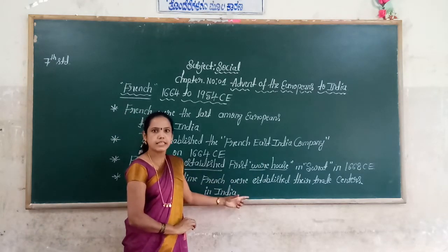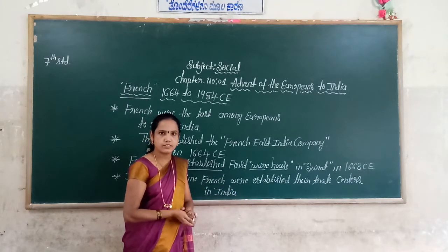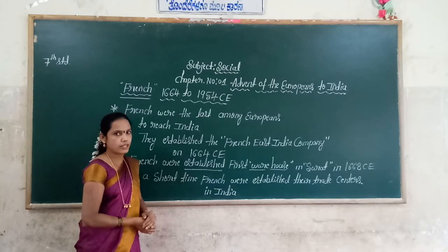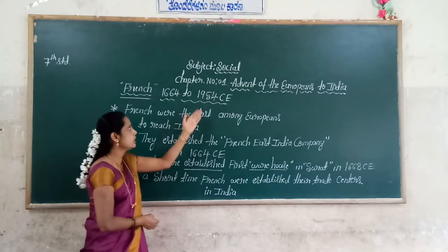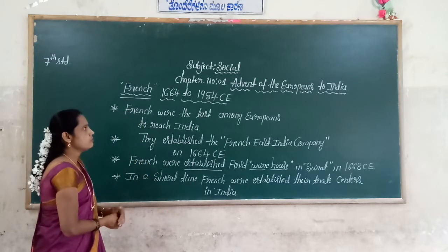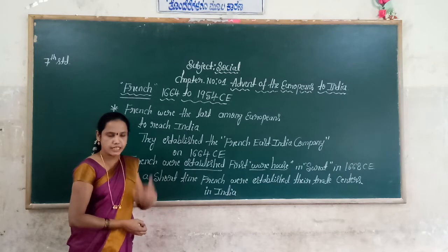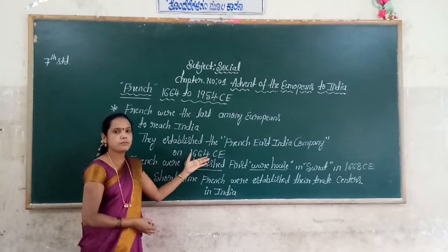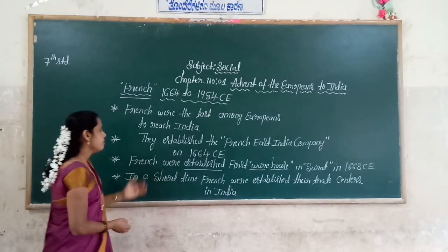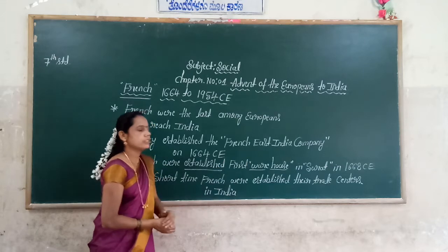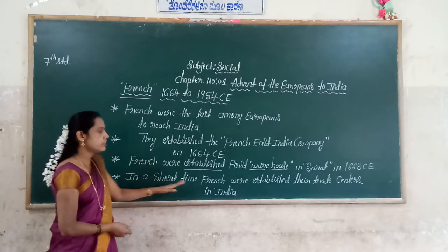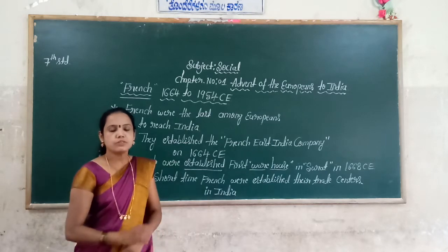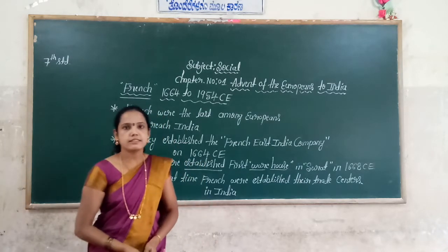These are all the trading centers established in India. This is the introduction of French. First, the French came to India in the year 1664 Common Era. They stayed in India until 1954 Common Era. They established the French East India Company in 1664 Common Era — very very important dates. And the French established their first warehouse in Surat in 1668 Common Era. In a very short time, the French established their trade centers in India. Next week we will discuss the important trade centers of French in India.